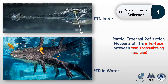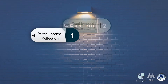One important note: partial internal reflection, or PIR, can happen in either one of the transmitting materials. In the upper picture, PIR happened in air. But if we place the camera in the water, PIR also happens from the surface of water. A light ray from the alligator's skin towards the air-water interface is partly reflected back into the water, and the remaining part is transmitted through air.